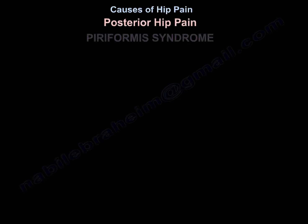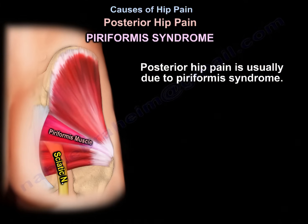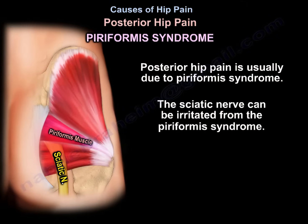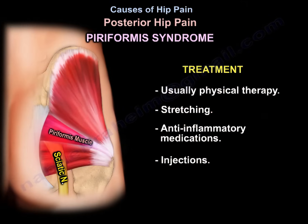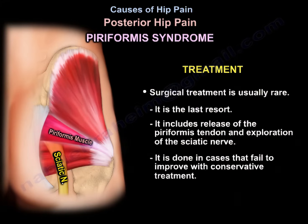Posterior hip pain is usually due to piriformis syndrome. The sciatic nerve can be irritated by piriformis syndrome. Treatment is usually physiotherapy, stretching, anti-inflammatory medications, and injections. Surgical treatment is rare — it is the last resort and includes release of the piriformis tendon and exploration of the sciatic nerve, done in cases that failed to improve with conservative treatment.